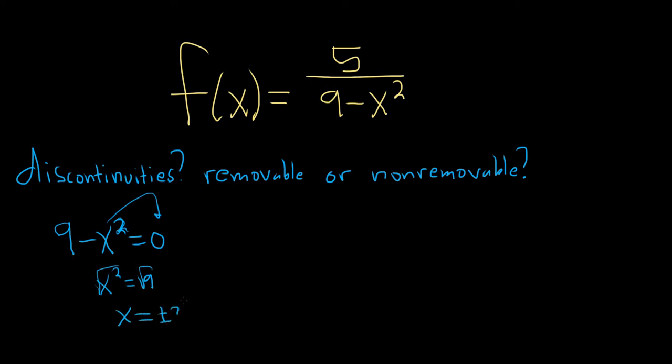So these are the places where it is not continuous. These are called discontinuities, and you can just look at it and tell, right? 3 and negative 3 will make the bottom 0.